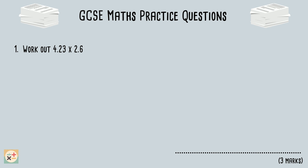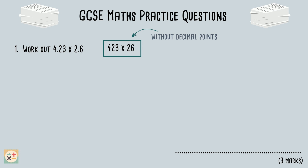For question 1, we need to solve a decimal multiplication. Firstly, we can rewrite the question without the decimal points in the numbers, as we will add the decimal point back into the correct place once we have the answer. You can now use any multiplication method to work this out, such as the column or grid method.